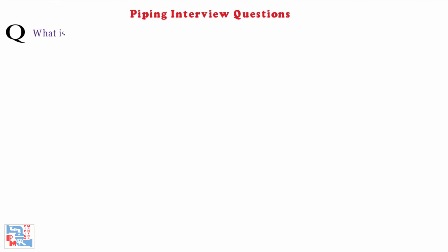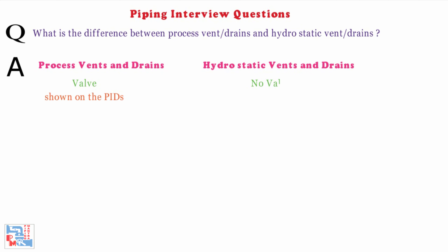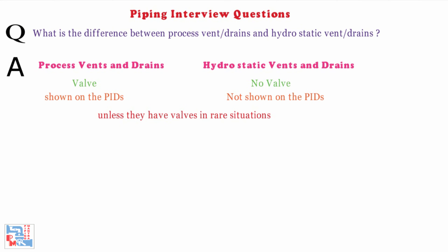Next, what is the difference between process vents and drains, and hydrostatic vents and drains? Process vents and drains have valves and are always shown on the P&IDs. Whereas hydrostatic vents and drains do not have valves on them and are not shown on the P&IDs, unless they have valves in rare situations.